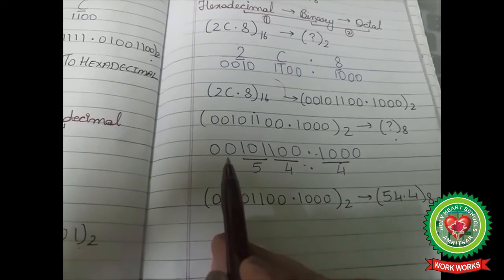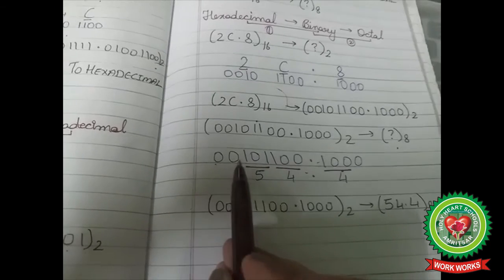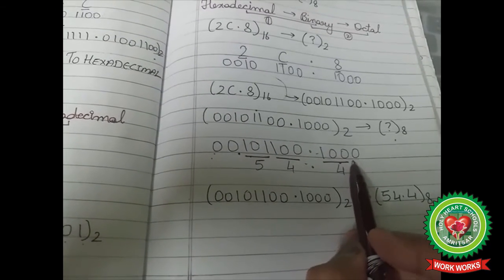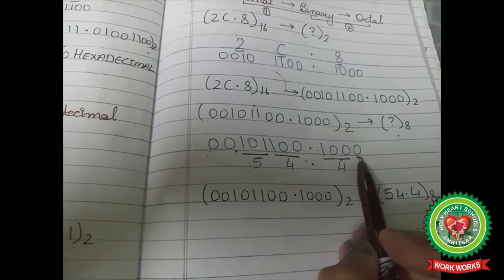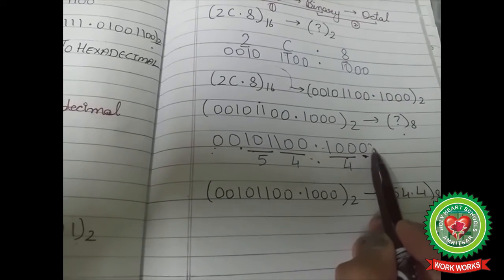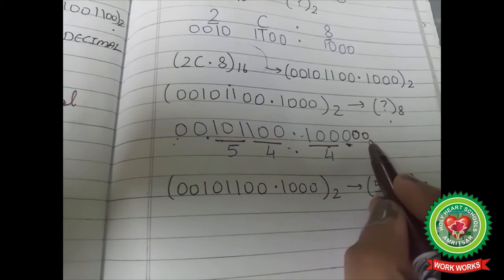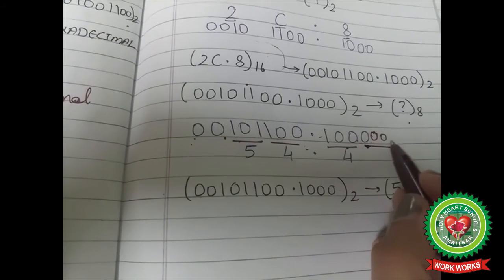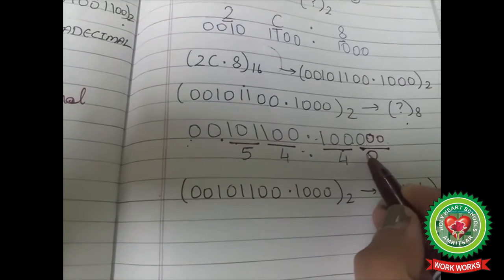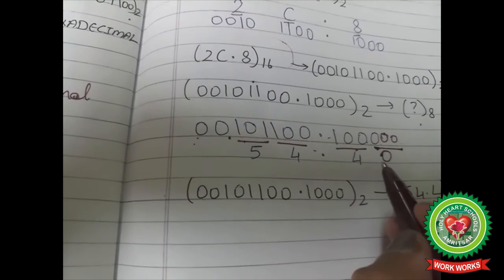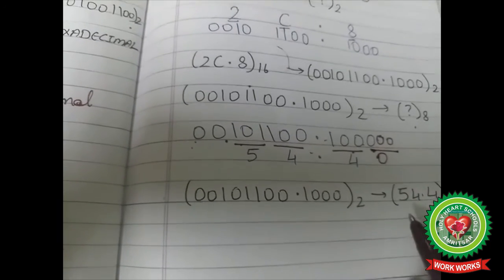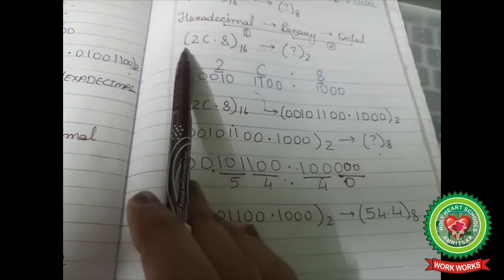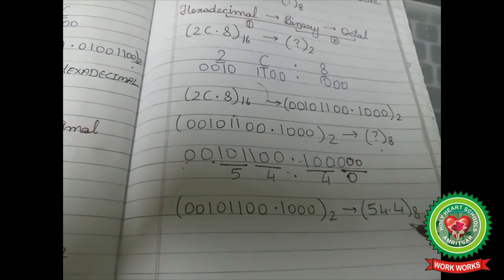Observe that leading zeros on the left are not included as they have no value. On the right side, if a single zero is left, add two more zeros to form a complete group of three — but since 000 equals zero, we can ignore that group. The final answer remains 54.4.